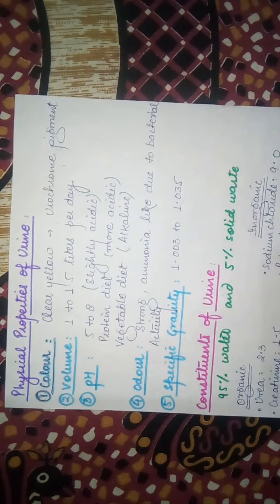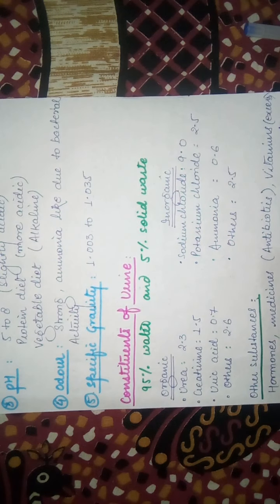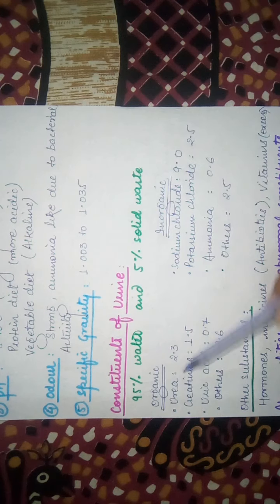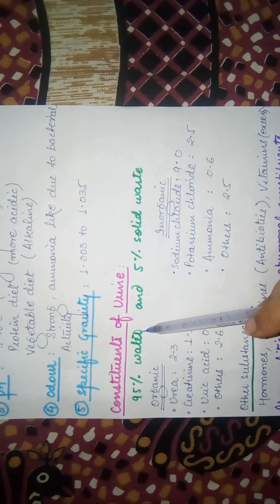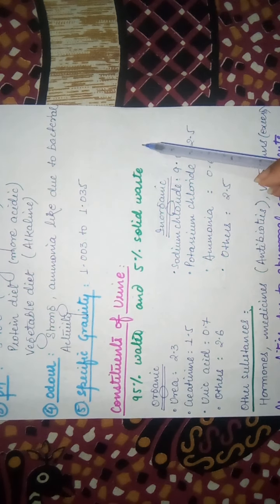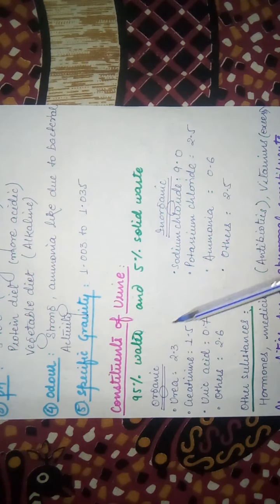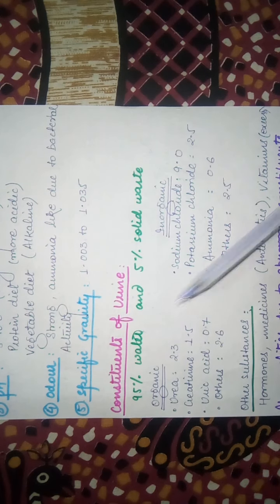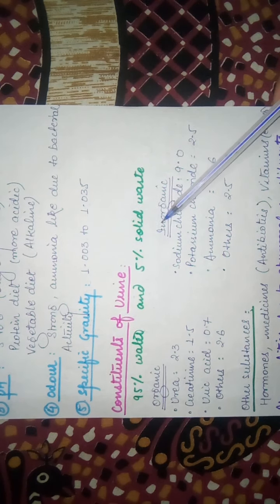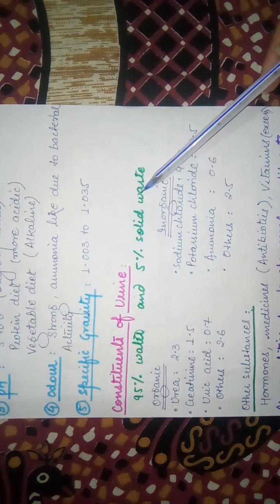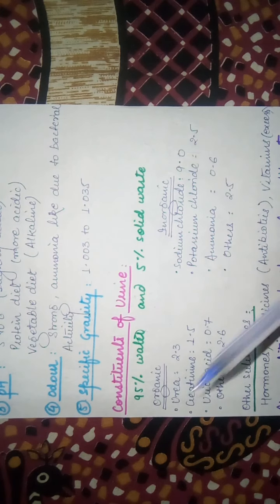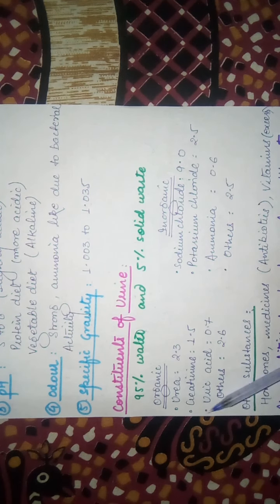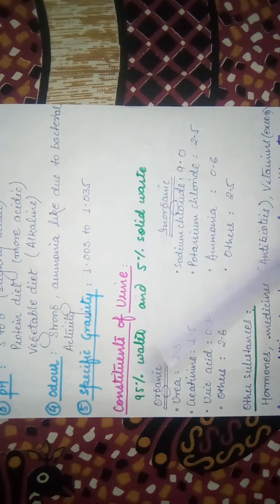Next we will talk about the constituents of urine. Basically, urine is 95% water and 5% solid waste. We will talk about the solid waste in two categories: there are organic components and inorganic components.